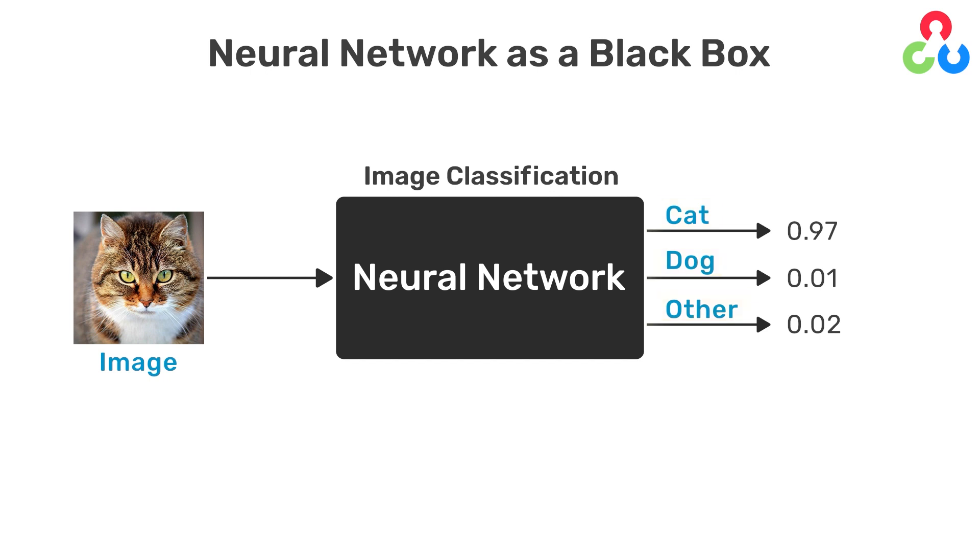Just to be clear, the output from the network are three numeric values, not the labels themselves. In this example, the network produces 0.97 for the first output, 0.01 for the second, and 0.02 for the third.